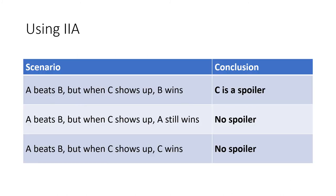Here are the scenarios: if A beats B originally but when C shows up B wins, then C is a spoiler — like preferring apple over blueberry, then choosing blueberry once cherry is offered. But if A beats B and A still wins when C appears, there's no spoiler. And if C shows up and C actually wins, that's also not spoiling — to be a spoiler, C must be an irrelevant alternative that can't win, yet changes the outcome between the other candidates.